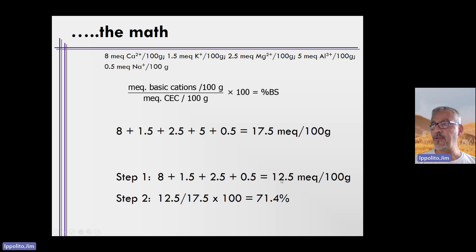Then you take this number in conjunction with this number and plug it into this equation. Here's the equation. 12.5 divided by 17.5 times 100 equals 71.4%. That's the base saturation.